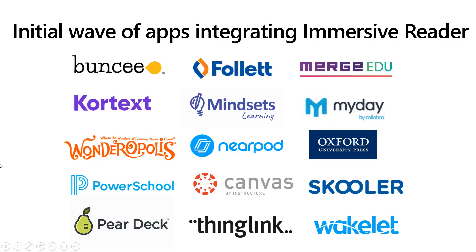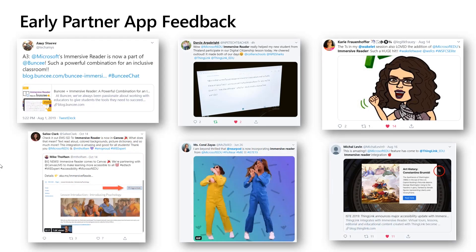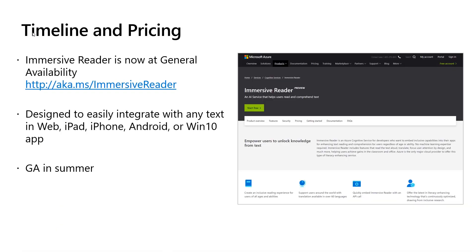We've had many partners who have already integrated the Immersive Reader — we're at over 80 partners now. We also have really powerful feedback from customers that have experienced it integrated in their solution, so it can make you look really good as a partner. In terms of timeline and pricing, we expect to reach general availability in the summer. You can integrate across any of these apps — web, iPad, iPhone, Android, or a Windows 10 app. Everything is free right now until we go to general availability. This will be part of the cognitive services with a pricing model likely based on usage.